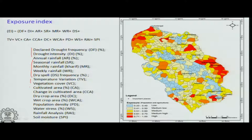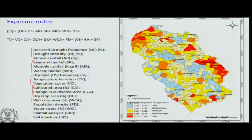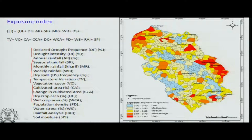Temperature variations and vegetation cover are also important — vegetation growth is affected by deviations in temperature, rainfall conditions, or water availability. Then there is the type of cultivated area: if it is a cultivated area, we are looking at crop production for planning purposes.